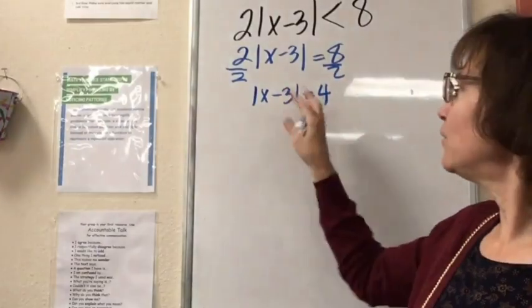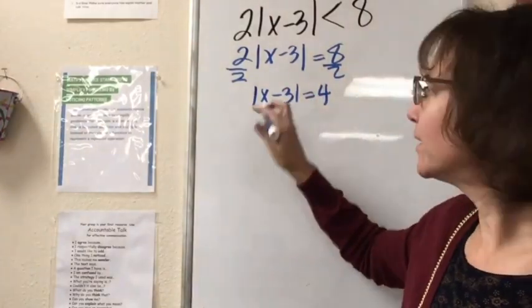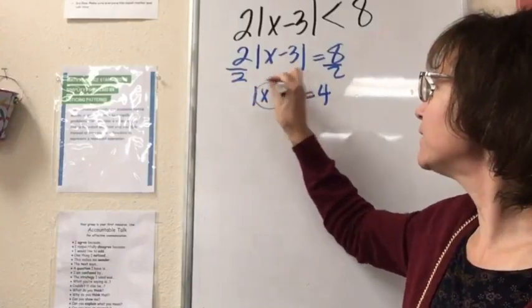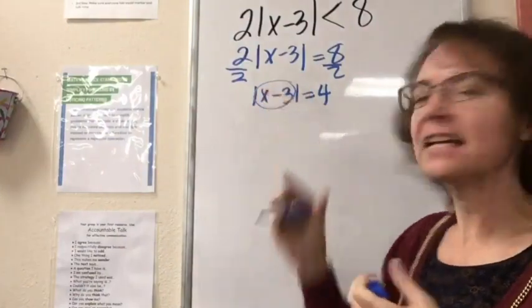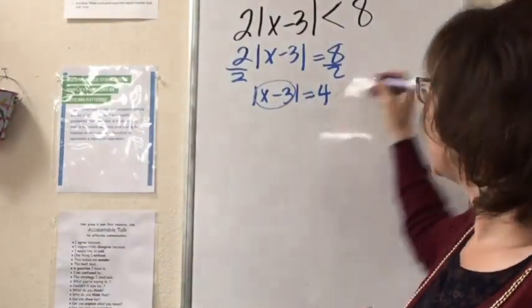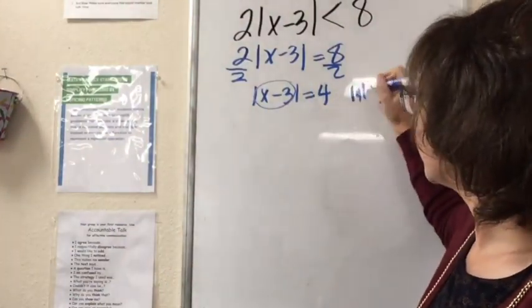Now in this case, in order for this to be true, inside the absolute value can be 4 or negative 4. If x minus 3 is equal to 4, we know that the absolute value of 4 is 4. If x minus 3 is equal to negative 4, we also know that's true.